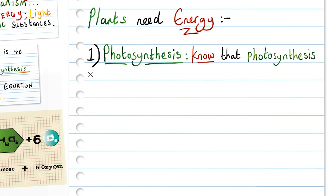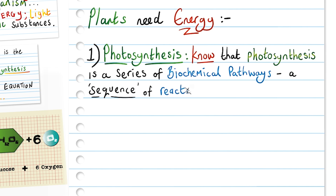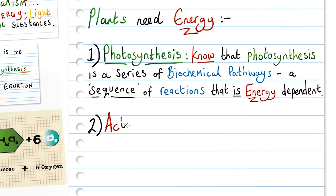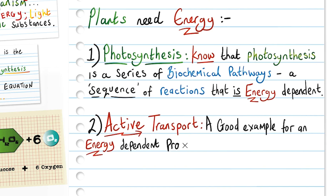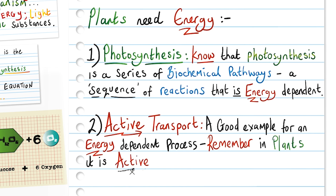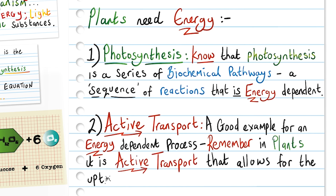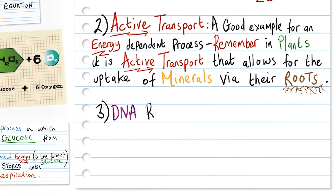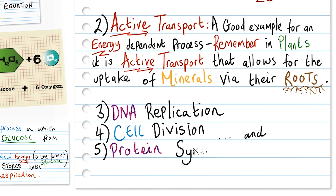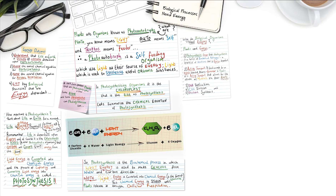Know that photosynthesis is a series of biochemical pathways, a sequence of reactions, that is energy-dependent. Number two: active transport — always a good example for an energy-dependent process. In plants, it is active transport that allows for the uptake of minerals via their roots. Number three: DNA replication. Number four: cell division. And number five: protein synthesis. All are good examples of energy-dependent processes.